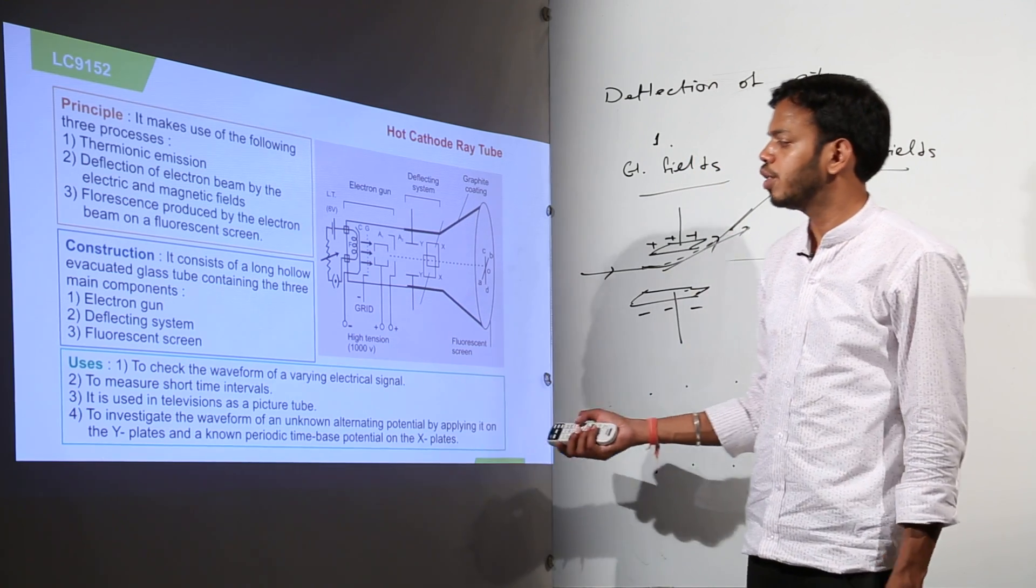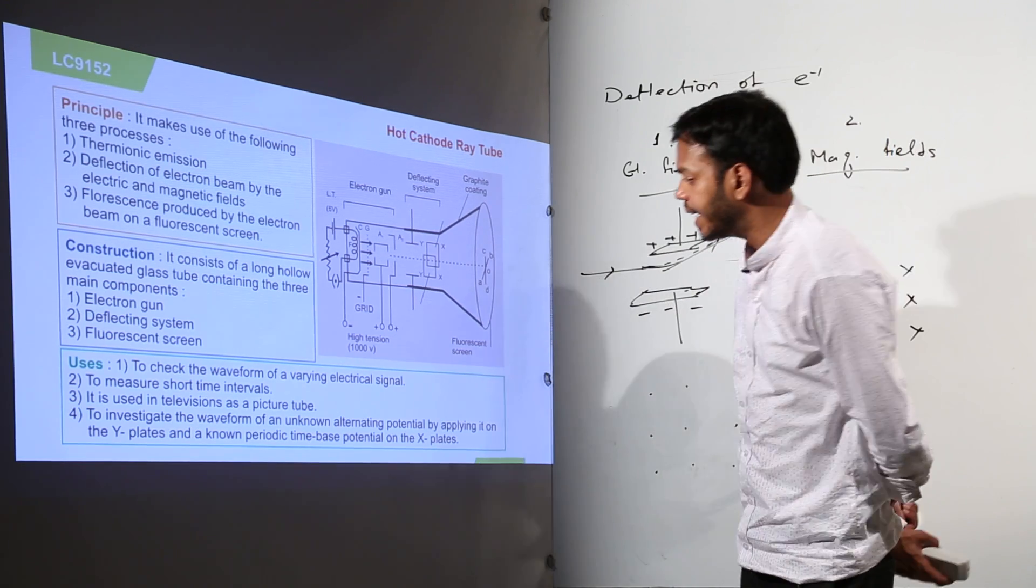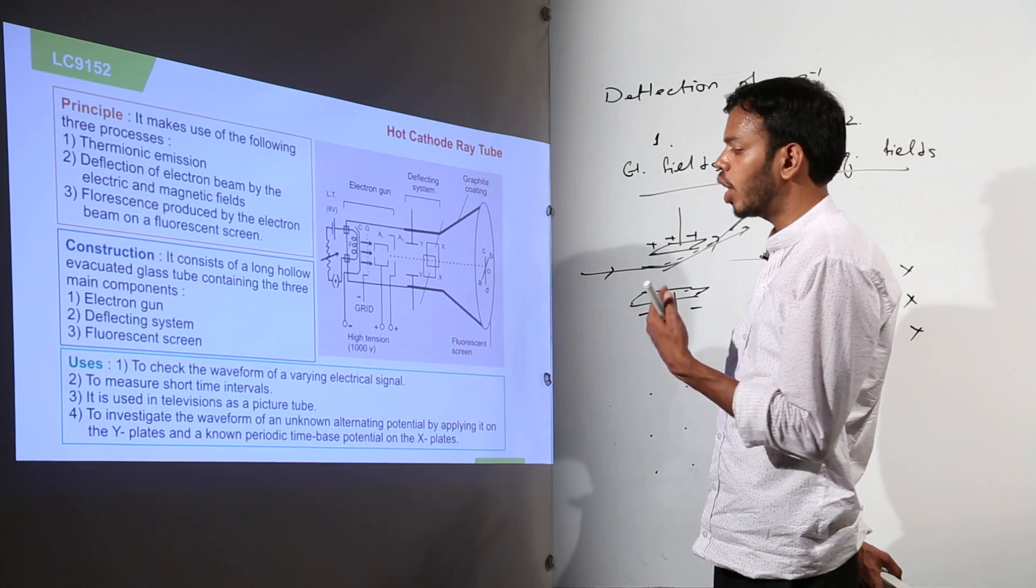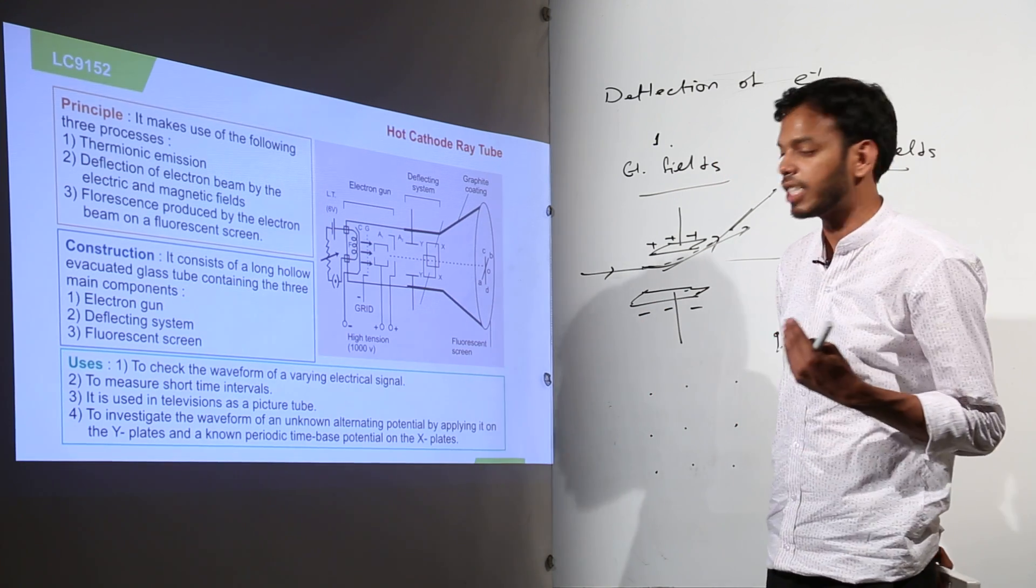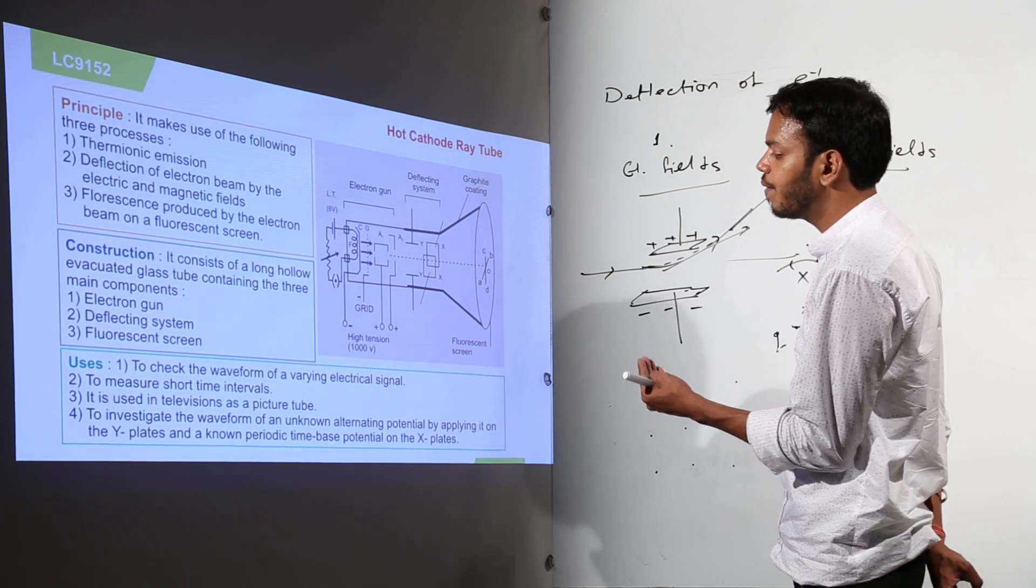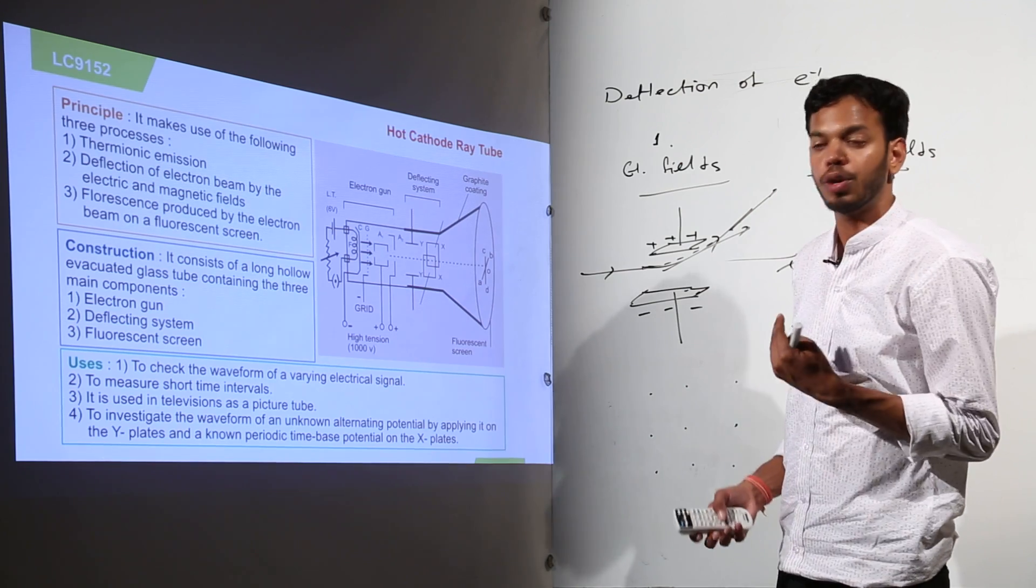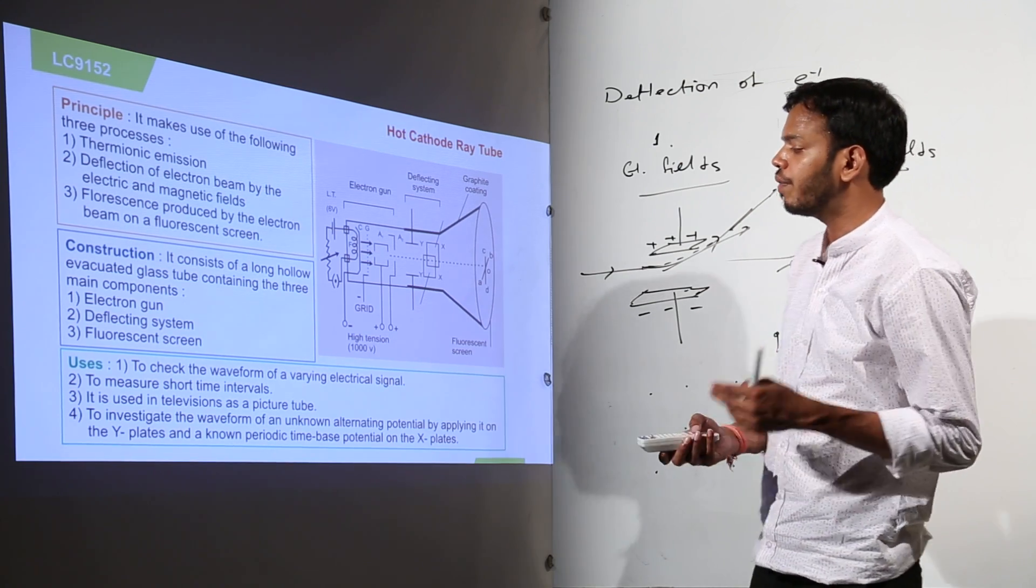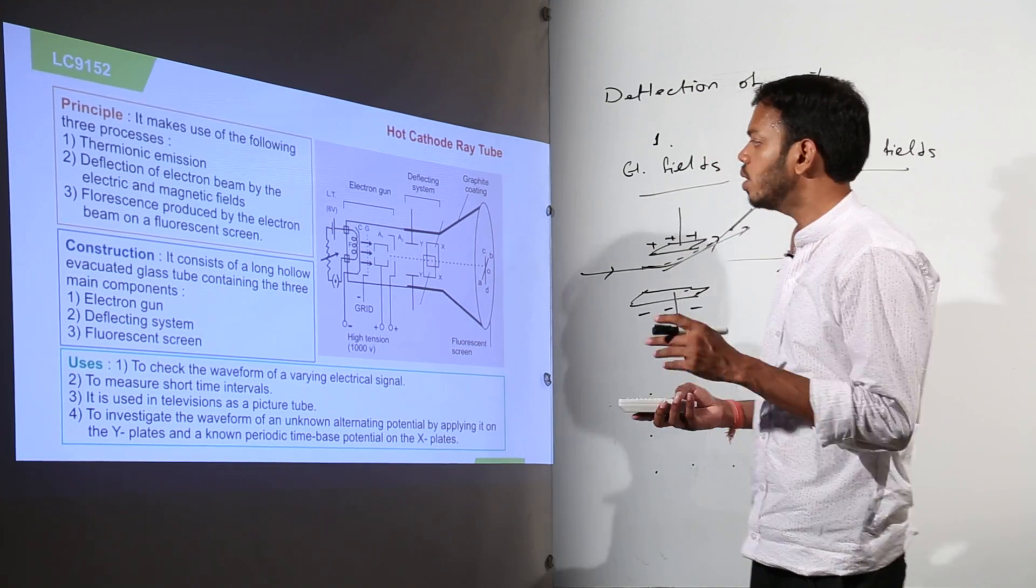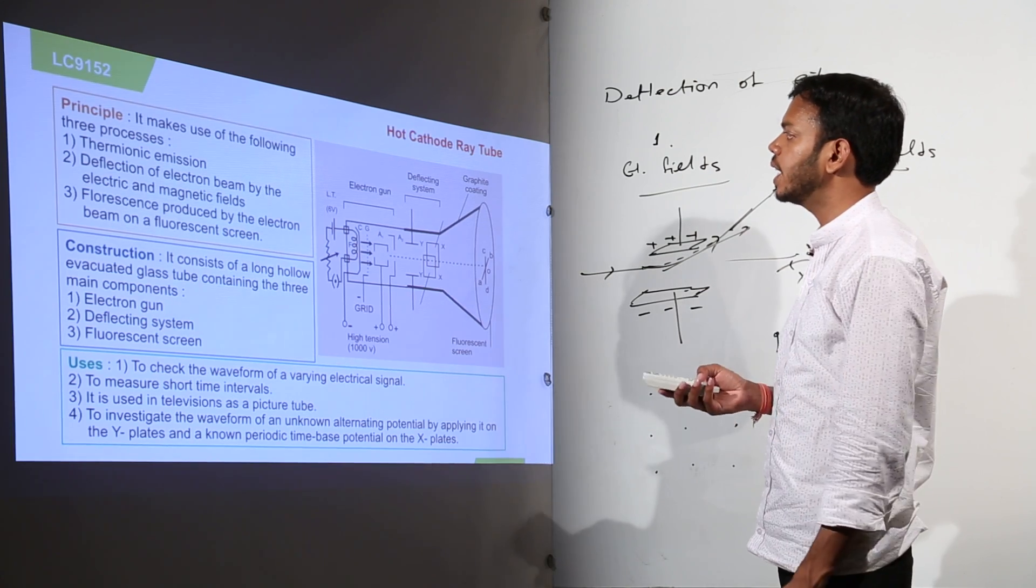Now the usage is to check the waveform of varying electrical signal, to measure short time intervals. It is used in television as picture tube, to investigate waveform of an unknown alternating potential by applying it to the Y plates of known potential. So we can do a lot of things with CRT.